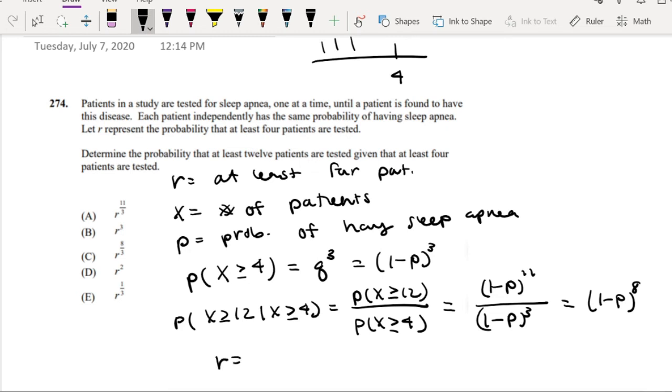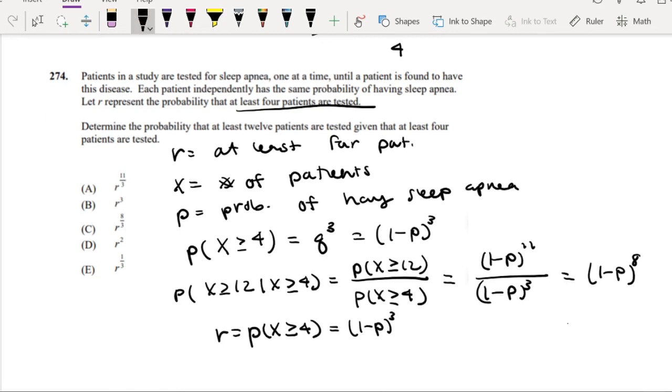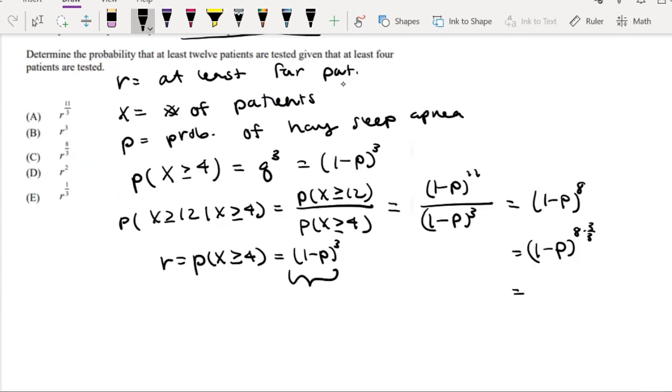And again, R is defined to be at least 4 patients that are tested. So R is defined as probability that X is greater than or equal to 4, which again we know is 1 minus P cubed. So we want to try to make this 8 have the 3 in it. So we can do this by saying just 1 minus P, 8 over 3 times 3, right? Because 3 over 3 is just 1. And then just say this is 1 minus P to the 8/3 to the power of 3. And then we can just factor out the 3 and put everything else on the outside. So that's left with 8/3. 1 minus P to the third we know is defined as R.